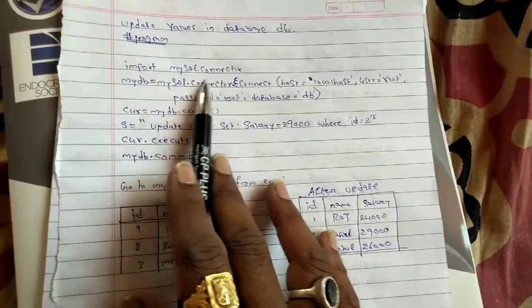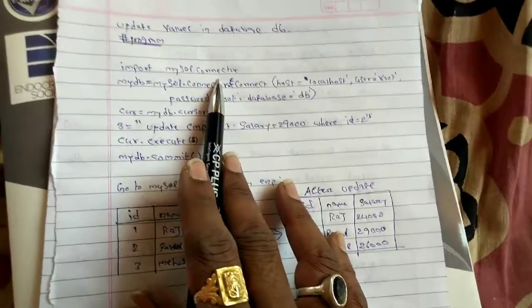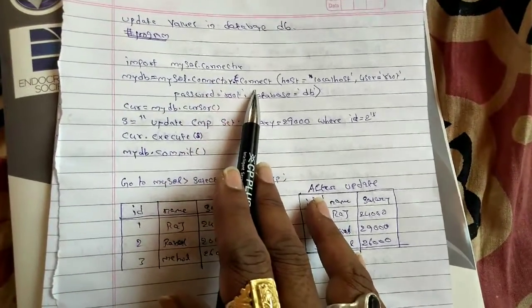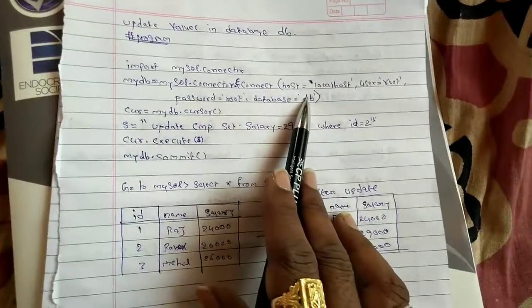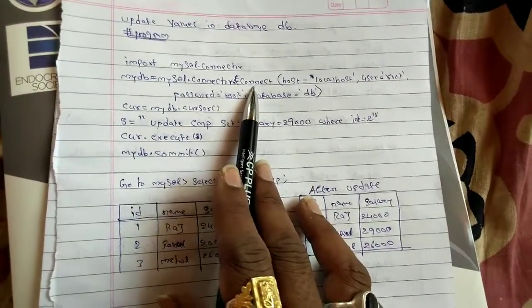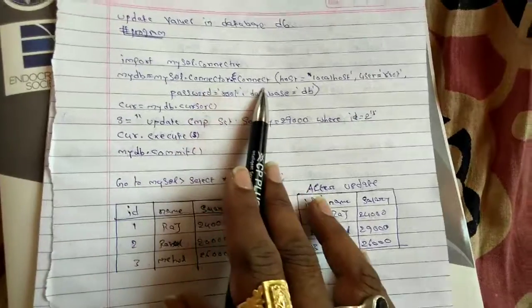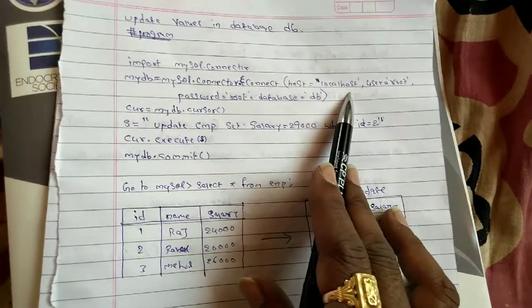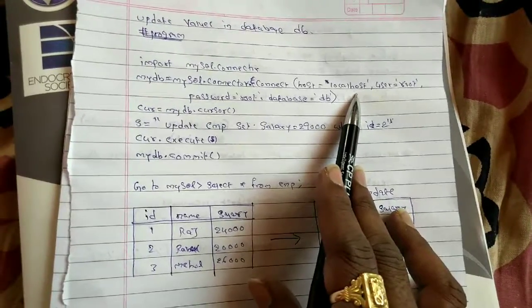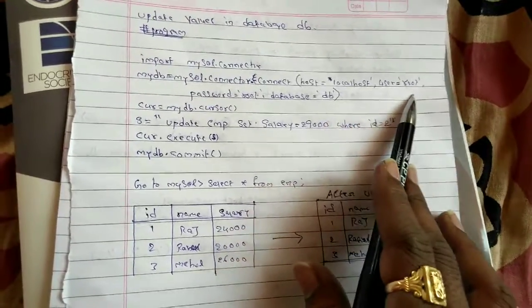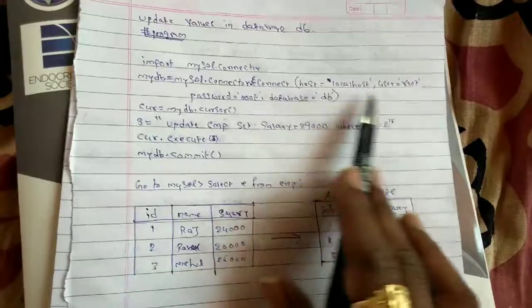So import mysql.connector. This will connect MySQL with Python ideally by using the connect class mysql.connector.connect. Host is localhost where MySQL and Python will be on a single PC. User is root, password is - sorry, user is Praveen and password is root.